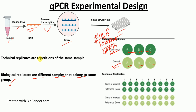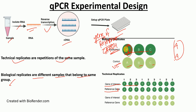Technical replicates are the repetition of the same sample. For example, you have one biological replicate, let's say A, and if you repeat this sample two times — AA — that is the technical replicate. As shown here, this is the gene of interest and this is the reference gene. For the gene of interest, we have three technical replicates for each biological replicate. This holds true across all three biological replicates. The same applies to the reference gene, with three technical replicates per biological replicate.